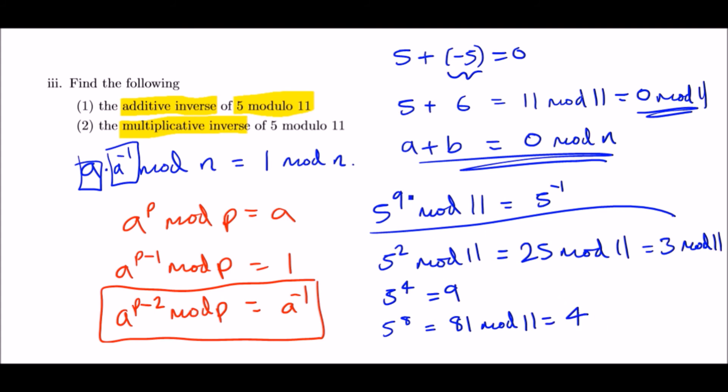5 to the power 1 is 5, so 4 times 5 is 20, and 20 mod 11 is going to be 9.